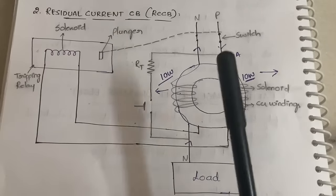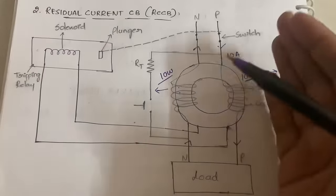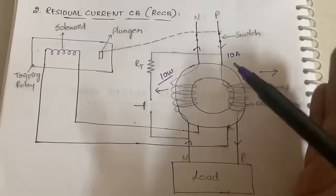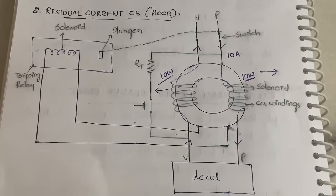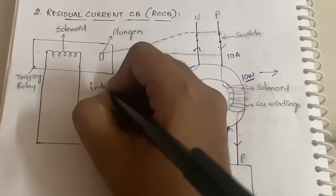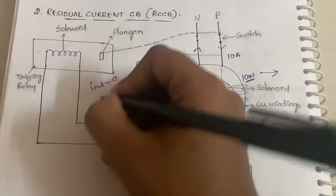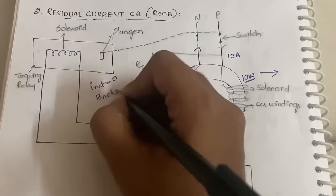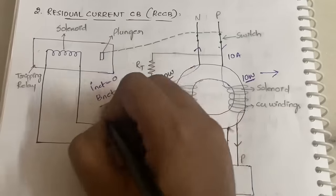Both magnetic fields cancel each other because they are equal in magnitude and opposite in direction. So the net magnetic field is equal to 0. In normal condition, I_net is 0 and B_net is also 0 — there is no magnetic field, no attraction, no tripping.